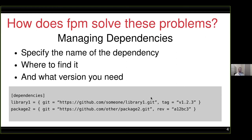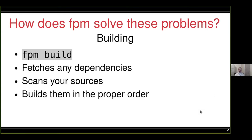For dependencies stored in Git repositories, you can use tags or a revision to specify a specific commit, and you can also specify a branch. For building, FPM will build your project with a single command, `fpm build`. There are some assumptions made about organization and naming conventions, and that all your source code is in modules. But for most projects following common conventions, `fpm build` will just work — it will fetch any specified dependencies, scan through your sources, and figure out how to build them all in one single command.